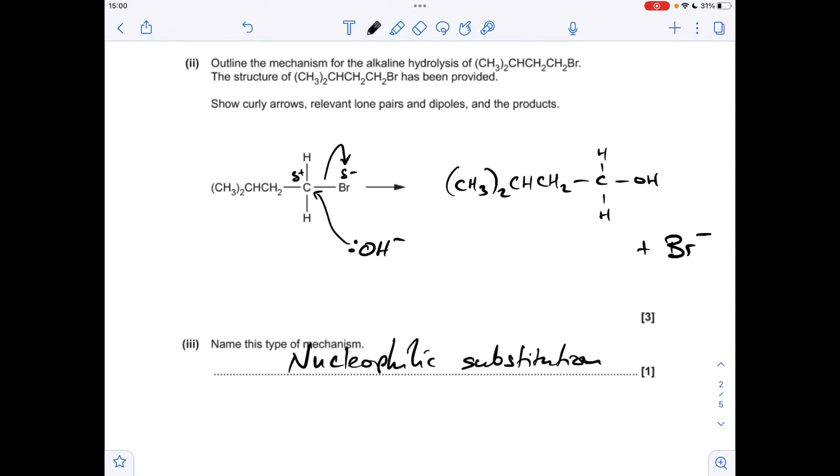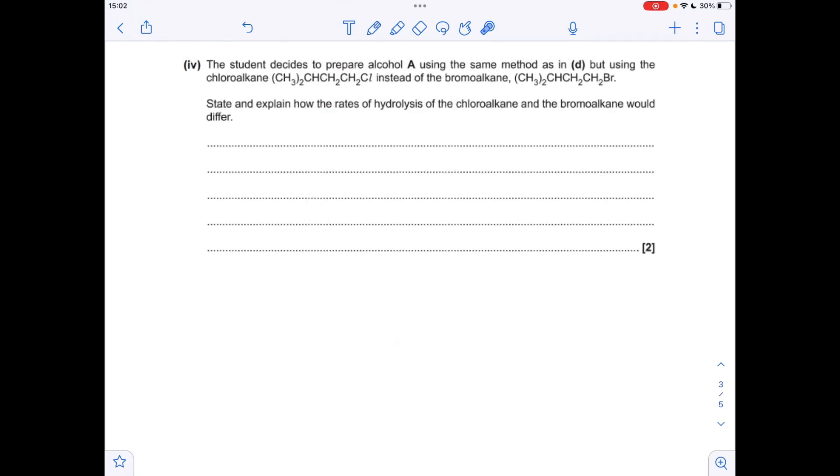Moving on to the final part of this question, the student decides to prepare alcohol A but they're using a chloroalkane instead of a bromoalkane. State and explain how the rates of hydrolysis differ. The rate of hydrolysis is all dependent on the strength of the carbon-halogen bond in the haloalkane. We've got a C-Cl bond in the chloroalkane, we've got a C-Br bond in the bromoalkane. Well, the C-Cl bond is stronger, it's got a higher bond enthalpy than C-Br, so it doesn't break as easily, so the rate for this one will be slower.